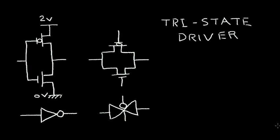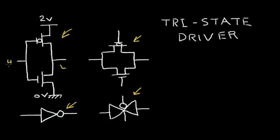In a previous video, we explained the operation of the CMOS inverter shown at the left, and the symbol for this inverter is shown here. We also talked about the CMOS switch, where this is the symbol for the CMOS switch. The inverter takes whatever is at the input — if the input is at a high voltage, the NMOS transistor is on, the PMOS transistor is off, and we're at a low voltage. So if it's high, it makes the output low; if the input is low, the output is high.